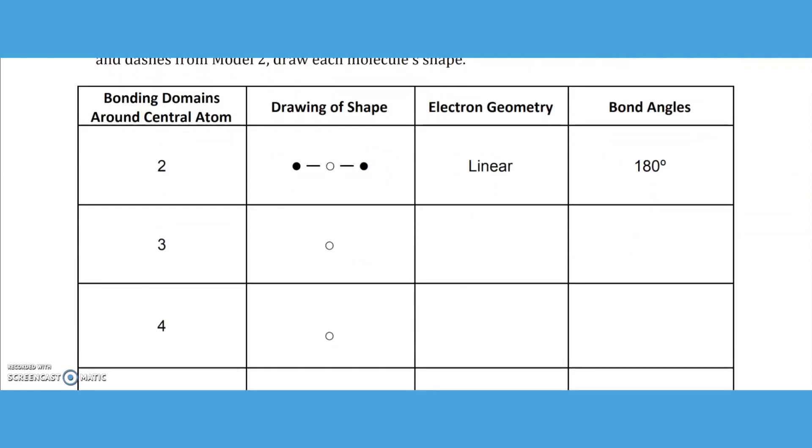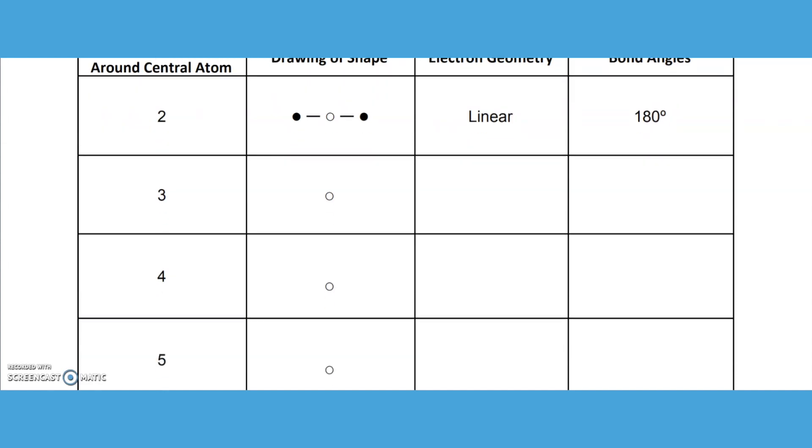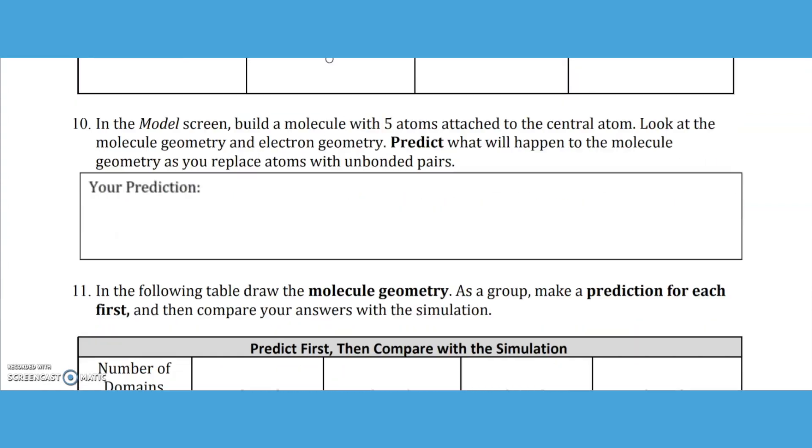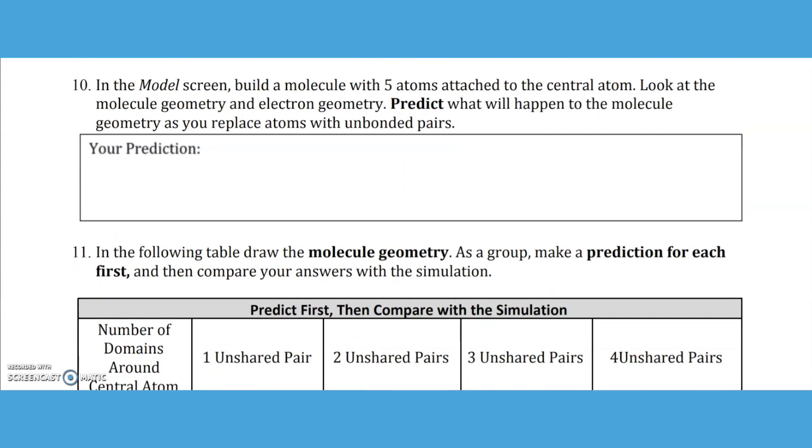On question nine, there's drawing of the shape, the electron geometry, and the bond angles. Don't forget that molecular geometry chart that I showed you earlier.